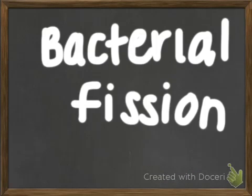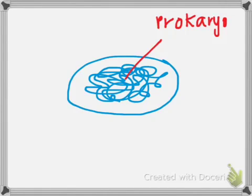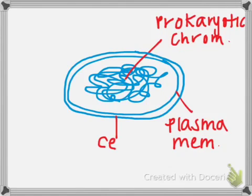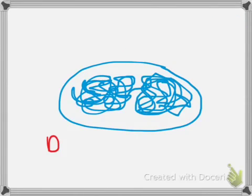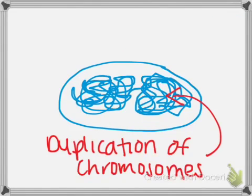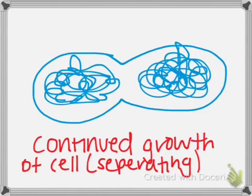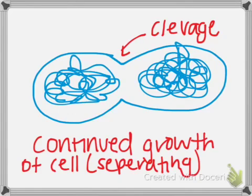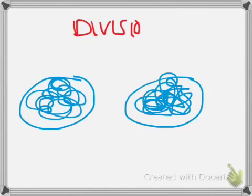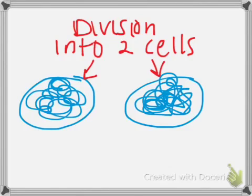Now we're going into bacterial reproduction — binary fission. There is the cell, or bacteria, with the prokaryotic chromosome, plasma membrane, and cell wall. The duplication of the chromosomes begins and you can see them starting to expand. Cleavage begins as the continued growth of the cell starts to separate, and the division creates two new cells.